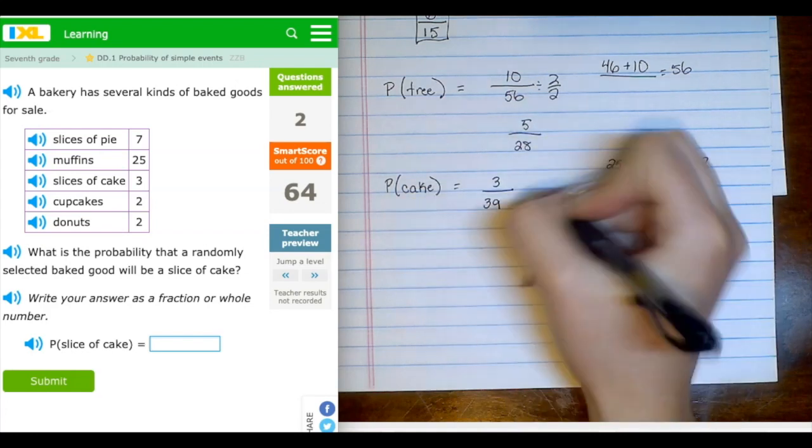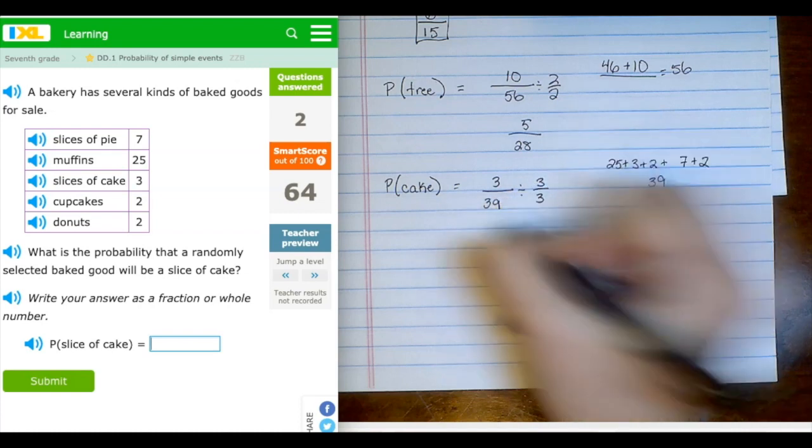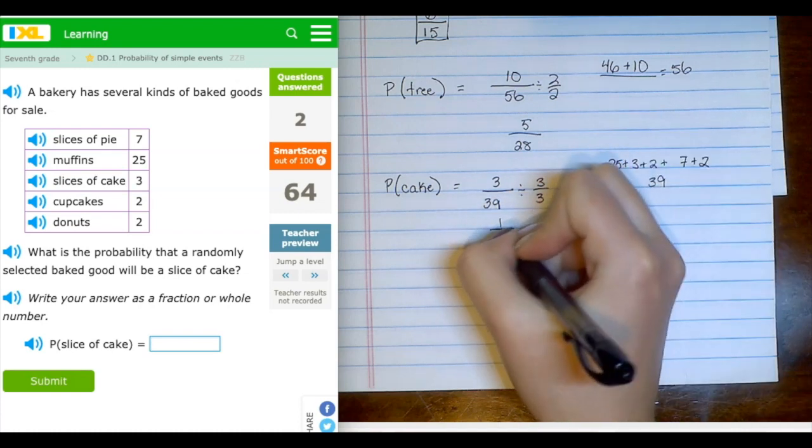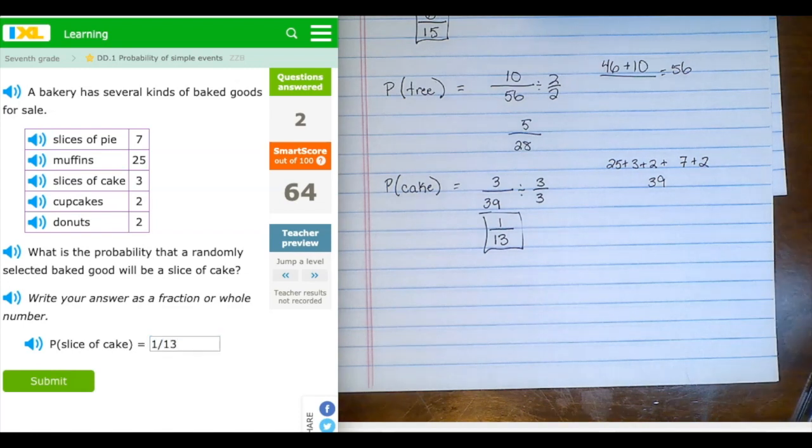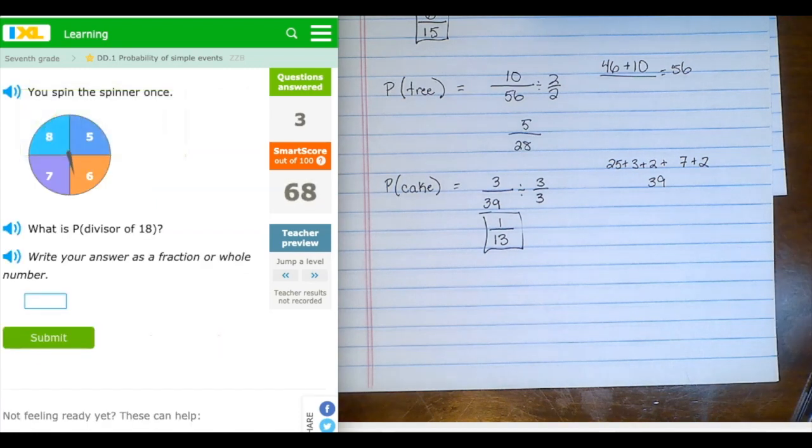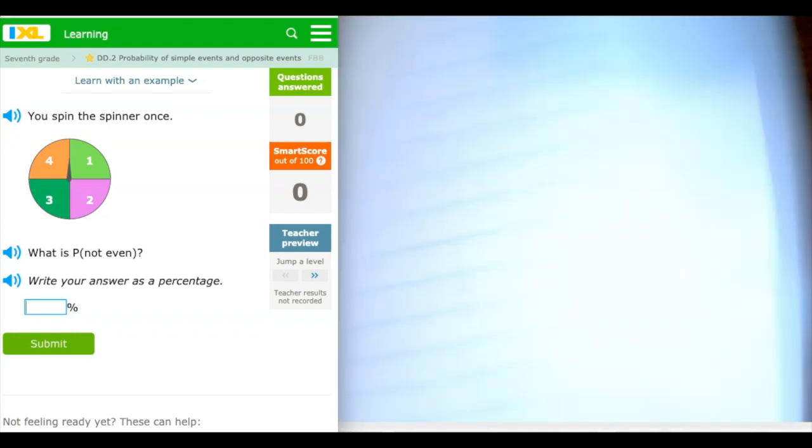And again, this is reducible. I can divide both of these things by 3, and I will get 1 over 13. That is my reduced fraction, which I can type in here. Let's go to the second assignment, which is simple events and opposite events.